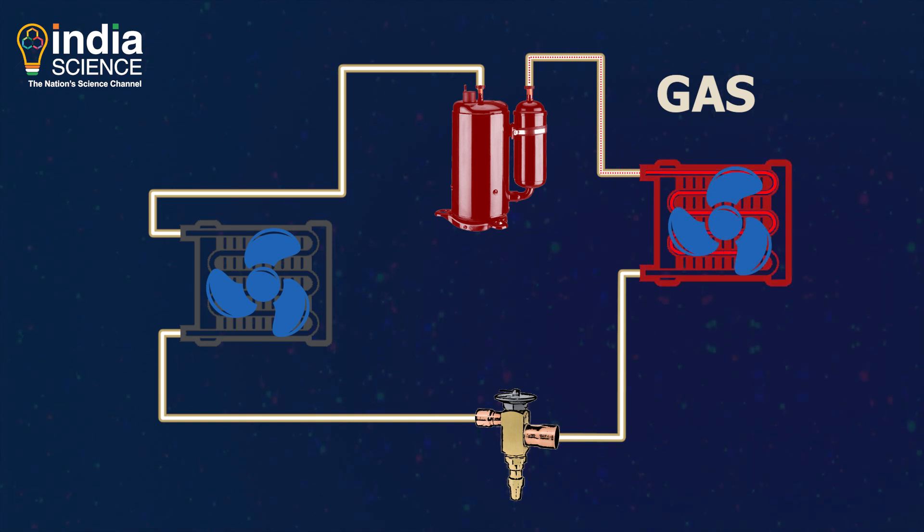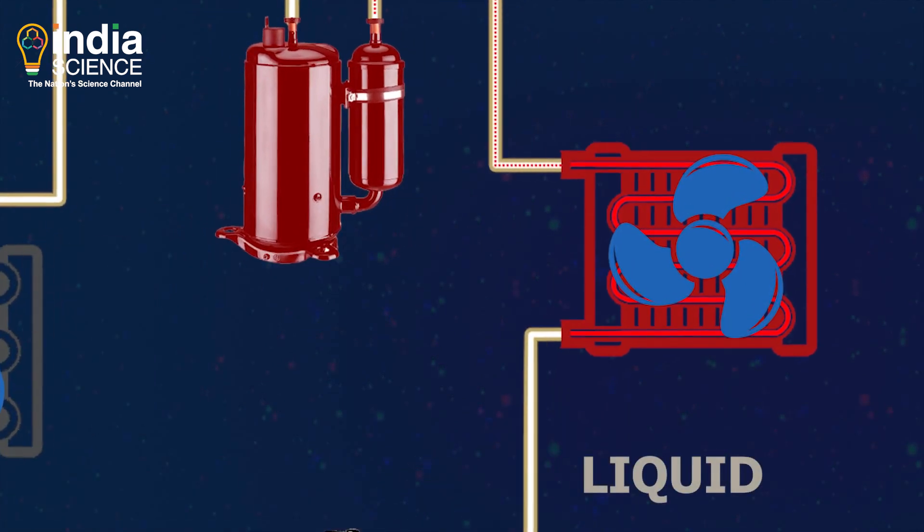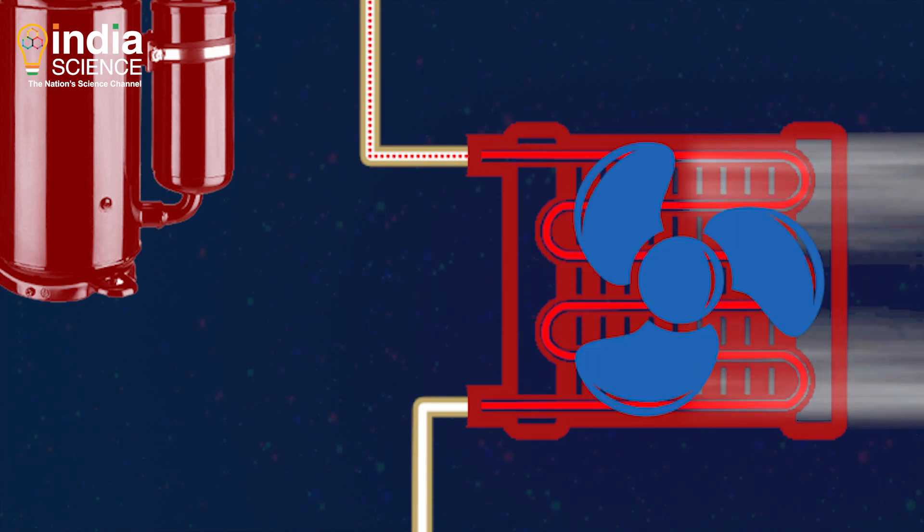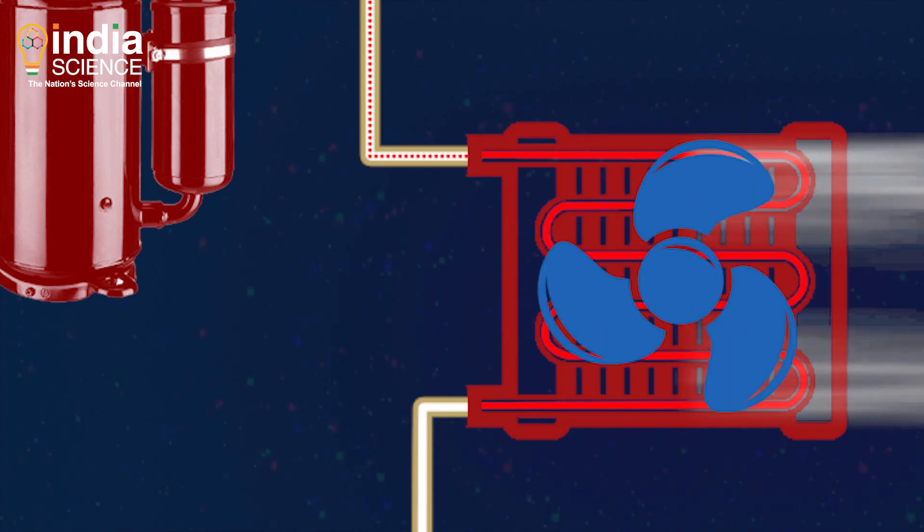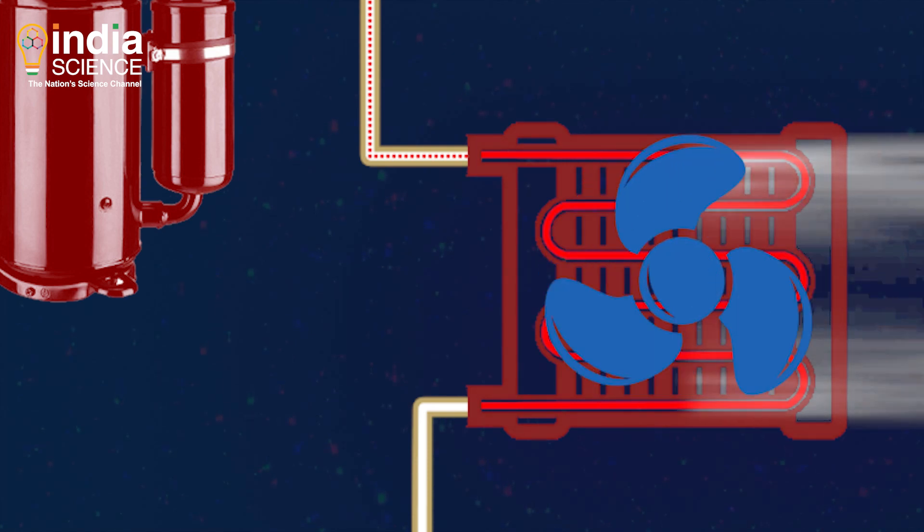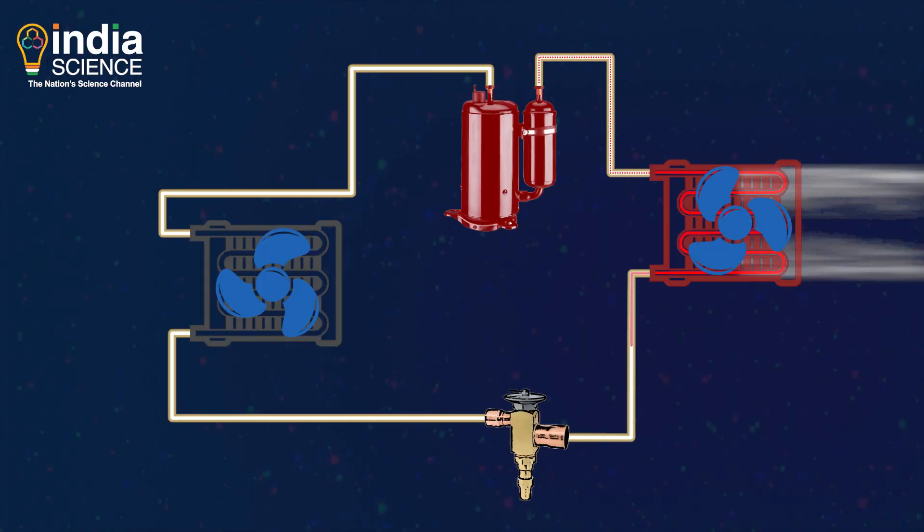This high-pressure and high-temperature refrigerant will go to the condenser coil through connecting pipes. Here, the gas will turn into a liquid without changing its temperature. Now, this heat energy is absorbed from the refrigerant. With the use of a condenser fan, it is dissipated outside. As the heat leaves, the refrigerant turns back into liquid.